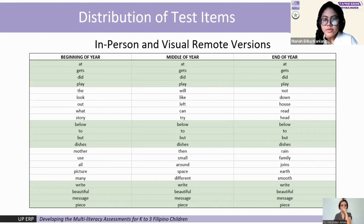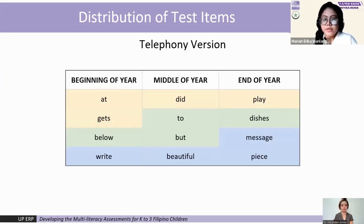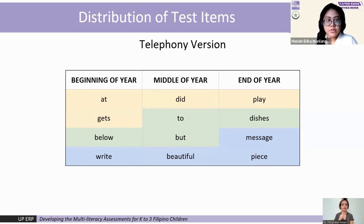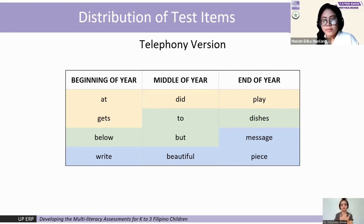This slide shows the final list of items for all three forms of the in-person and visual remote versions of the English spelling component of the MLAF. The common items across the forms are highlighted in green. However, for the telephony version, test components with a large number of items were reduced, as this could pose the greatest challenge in terms of administration. Therefore, for the telephony version, only the items in the common word list were distributed across the three forms, in order to retain a point of comparison across all three multimodal versions.